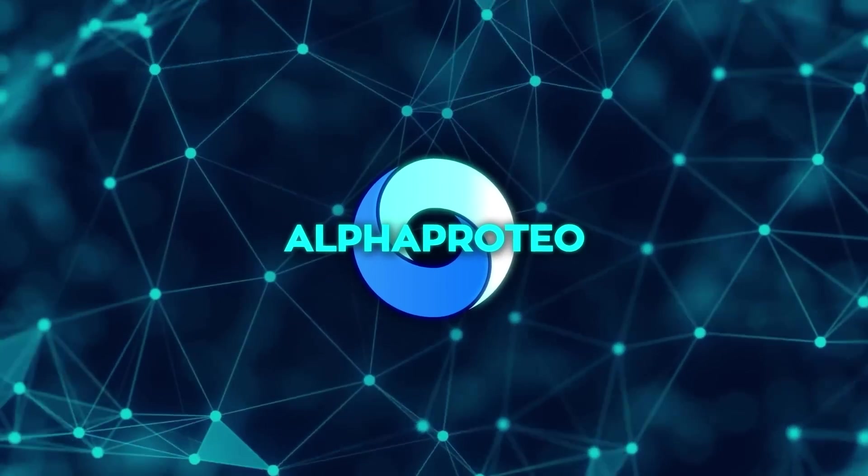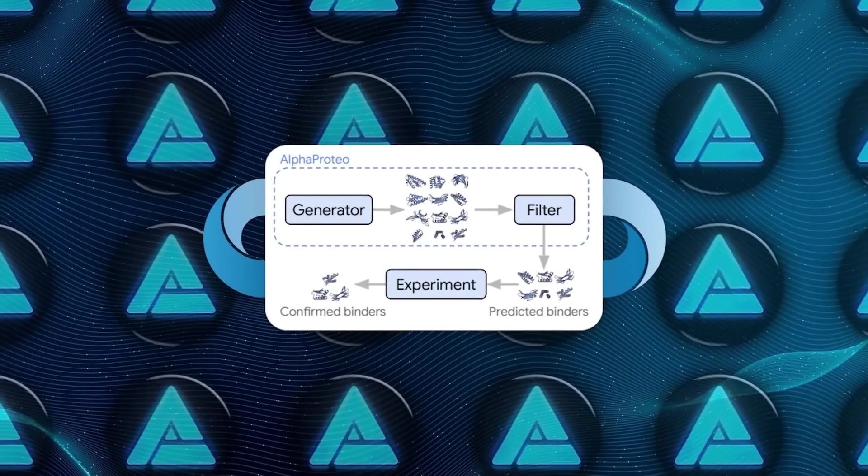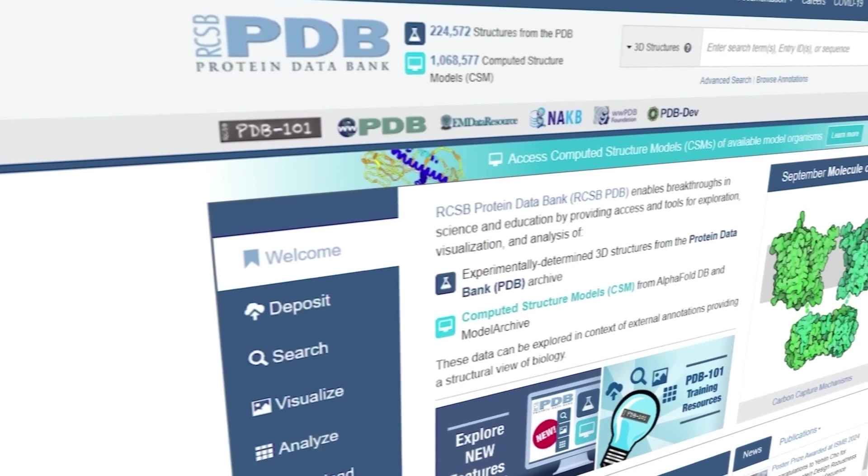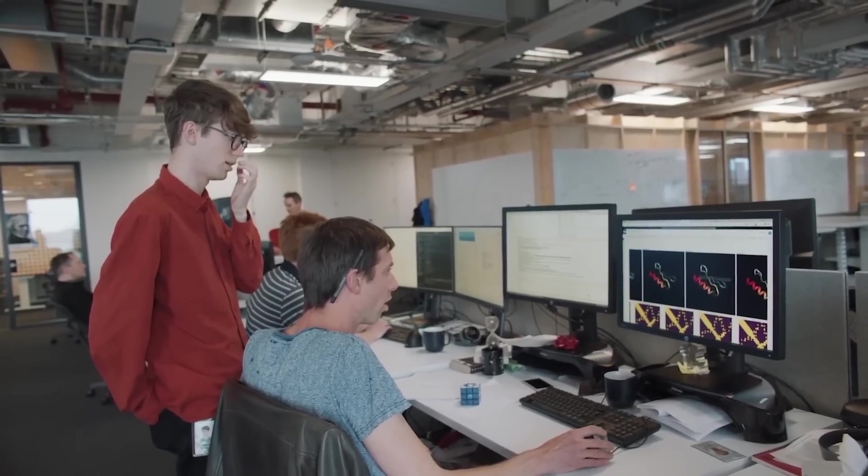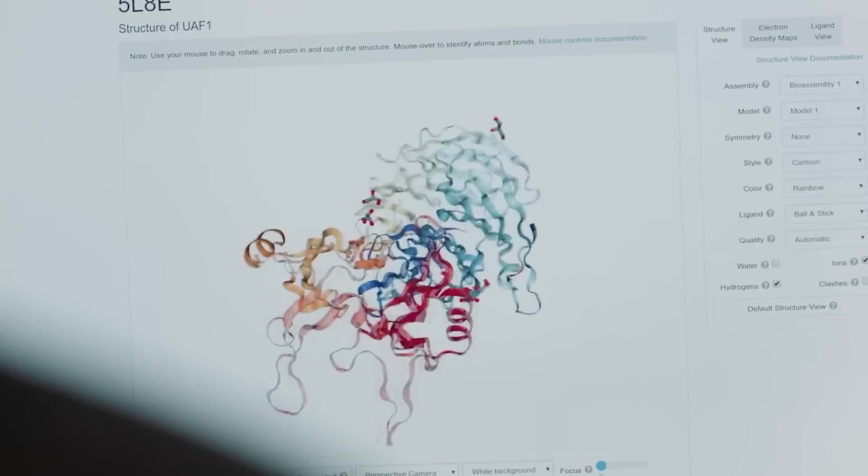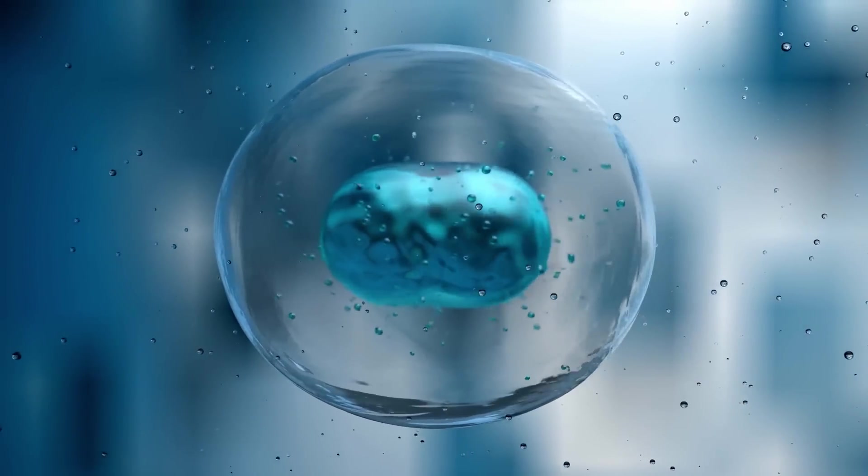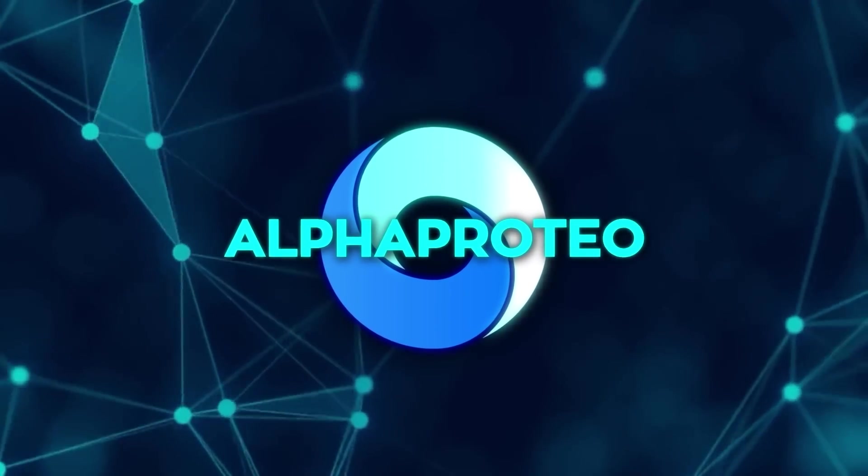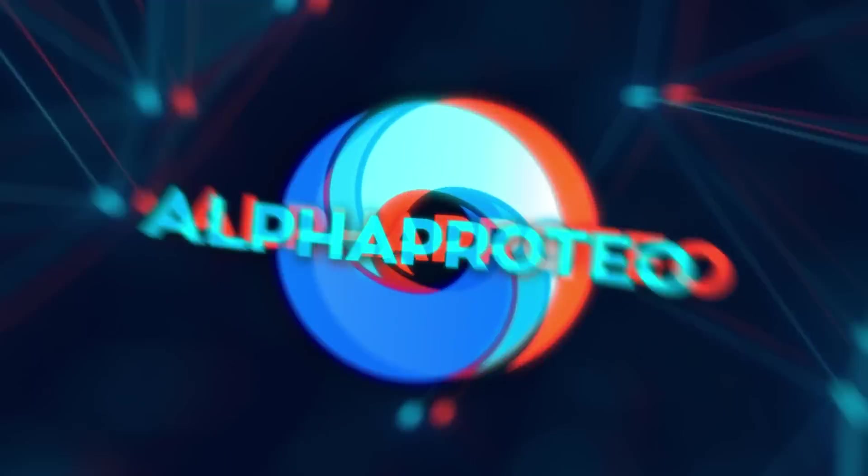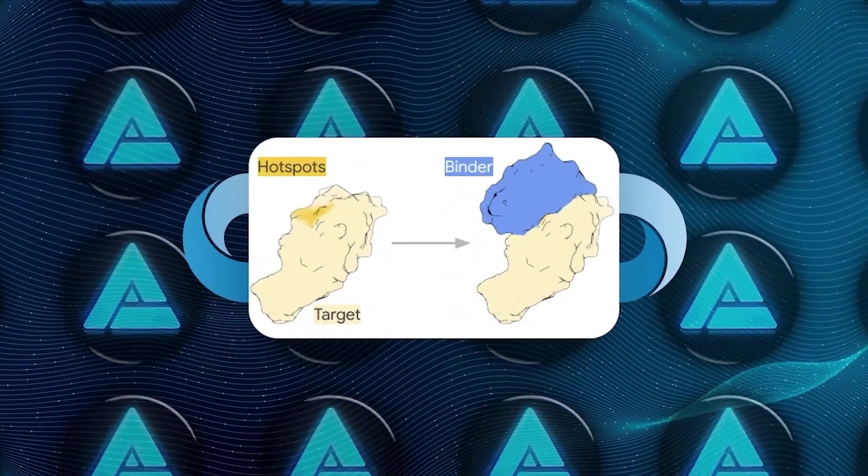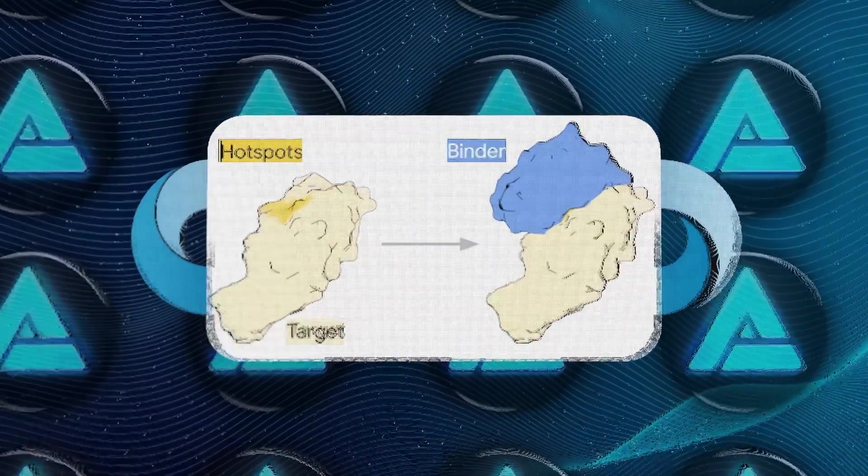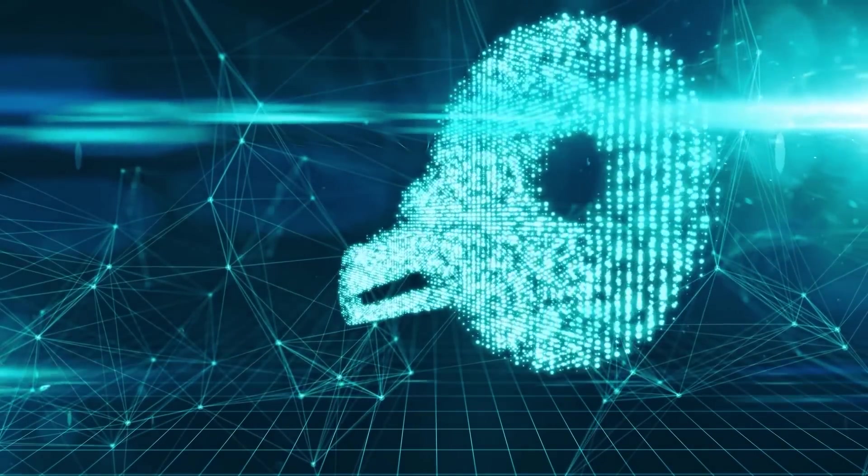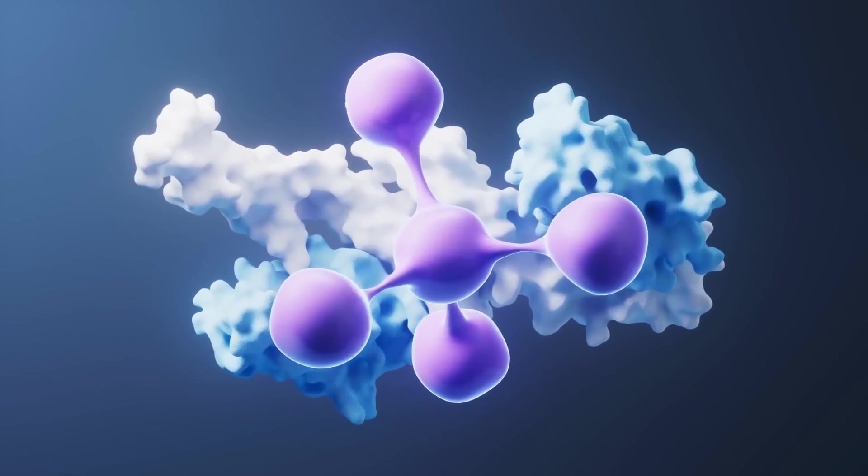But with AlphaProteo, we're talking about a major shortcut. This AI system has been trained on a ton of protein data. We're talking about data from the protein databank and more than 100 million predicted structures from AlphaFold. So yeah, it's learned a thing or two about how proteins interact. Now, if you give AlphaProteo the structure of a target protein and tell it where you want the protein to bind, it can design a binder protein that fits that target almost perfectly. That's like handing it the blueprint for a lock and having it design the perfect key.